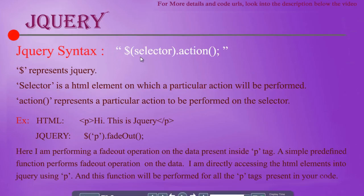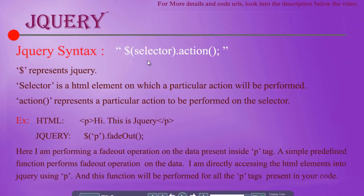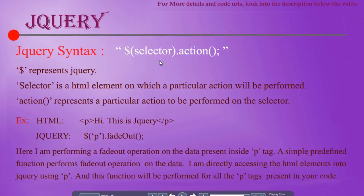And here, selector. A selector is a HTML element on which you want to perform an action. So here, we'll write a HTML element name, for example, a paragraph or a table or anything like that — the element on which we want to perform a particular action. Then the action represents the particular action which we want to perform on this HTML element.